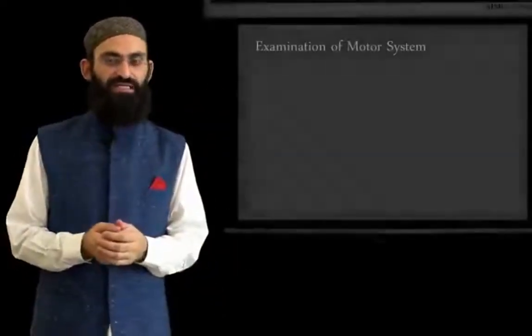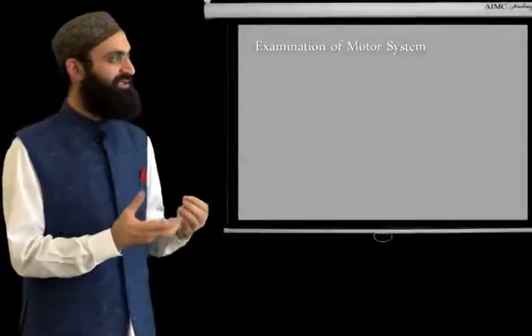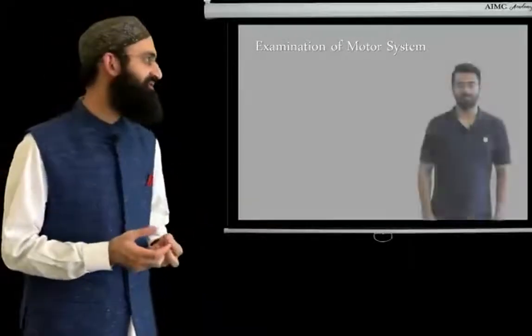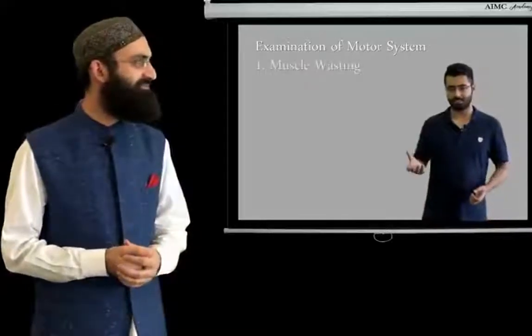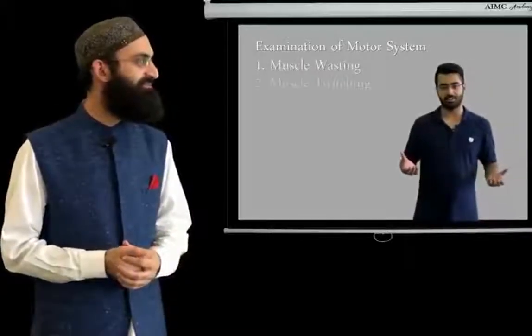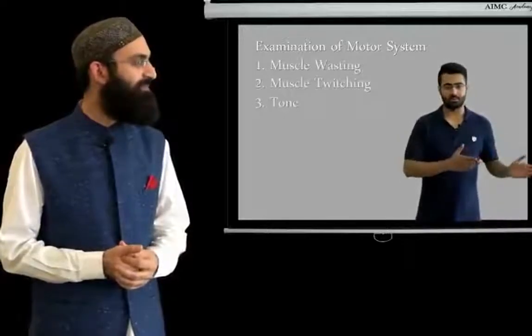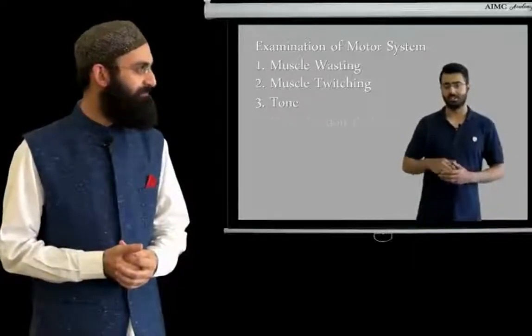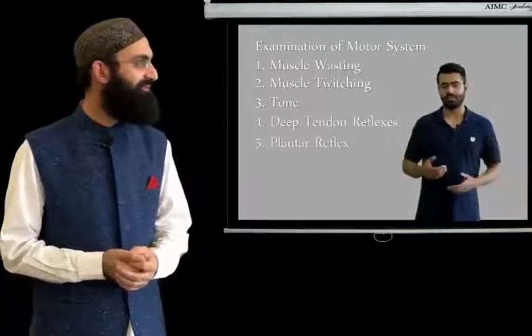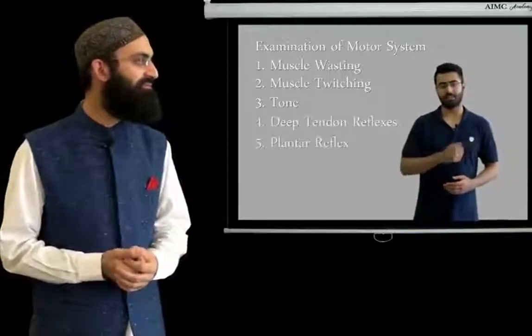In cases of motor weakness, the first question is whether it is lower motor neuron type or upper motor neuron type weakness, determined by examination of the motor system. The components of motor system examination include: observing muscle bulk and looking for signs of muscle wasting and spontaneous muscle twitching; checking muscle tone and power of various muscle groups; assessing deep tendon reflexes and the plantar reflex; and finally evaluating coordination and gait.